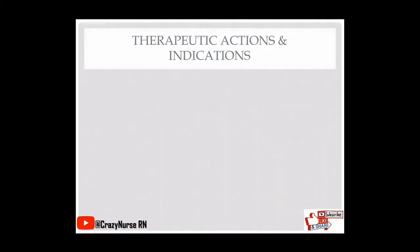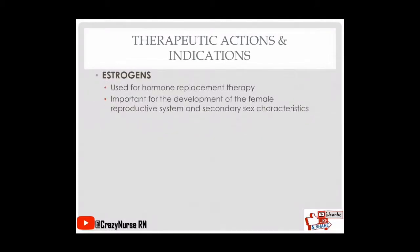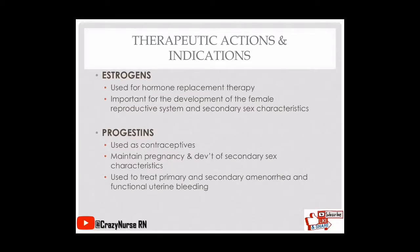The therapeutic actions and indications of sex hormones: for estrogens, they are used for hormone replacement therapy when a person lacks estrogen, and are important for development of the female reproductive system and secondary sex characteristics. For progestins or progesterone, they are used as contraceptives, maintain pregnancy, support development of secondary sex characteristics, and are used to treat primary and secondary amenorrhea and functional uterine bleeding.